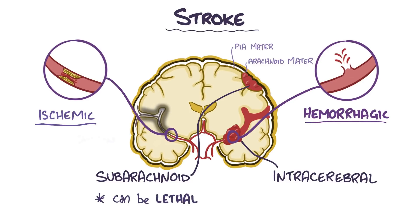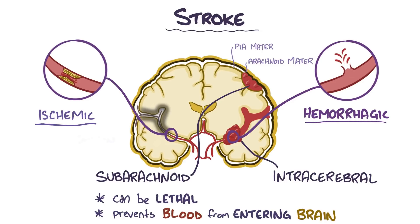Subarachnoid hemorrhages can lead to a pool of blood under the arachnoid mater that increases the intracranial pressure and prevents more blood from flowing into the brain.